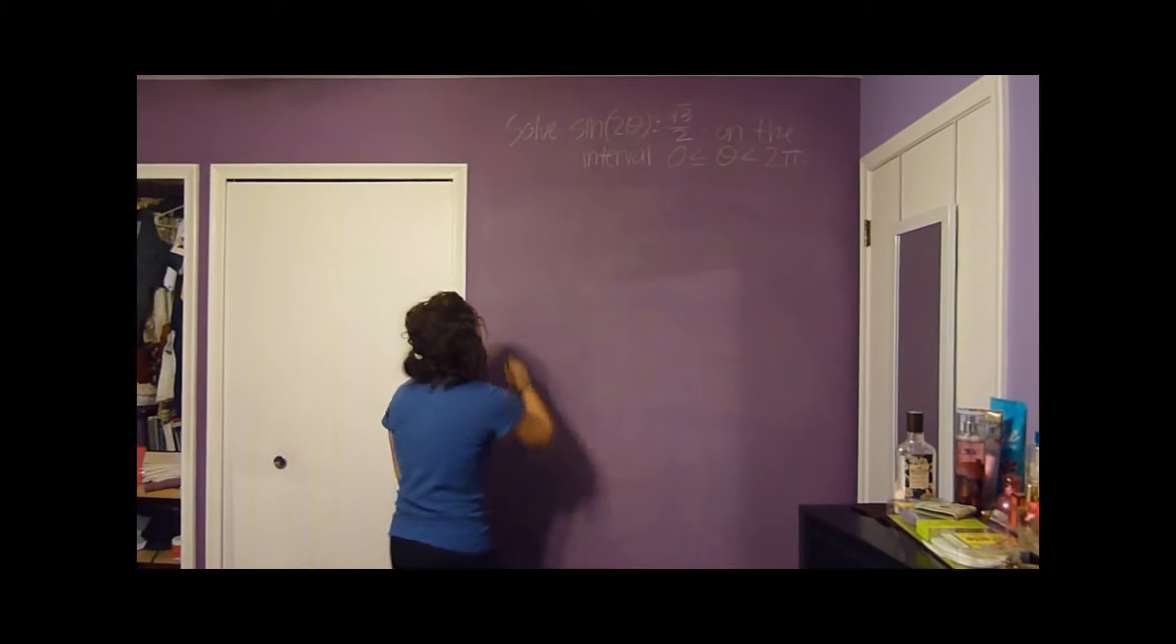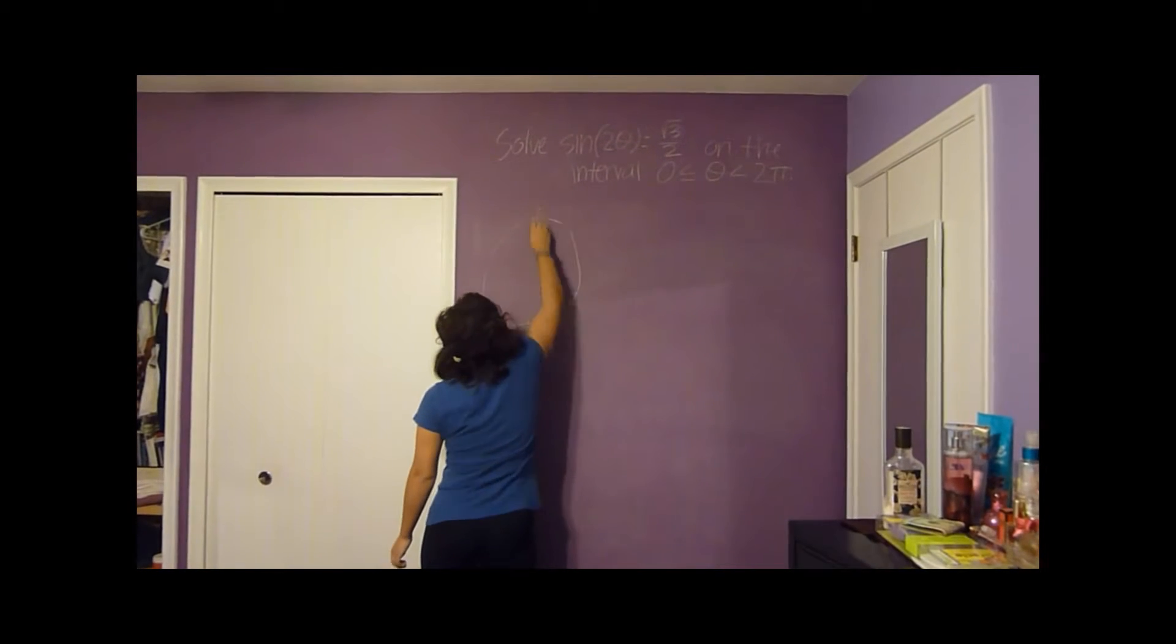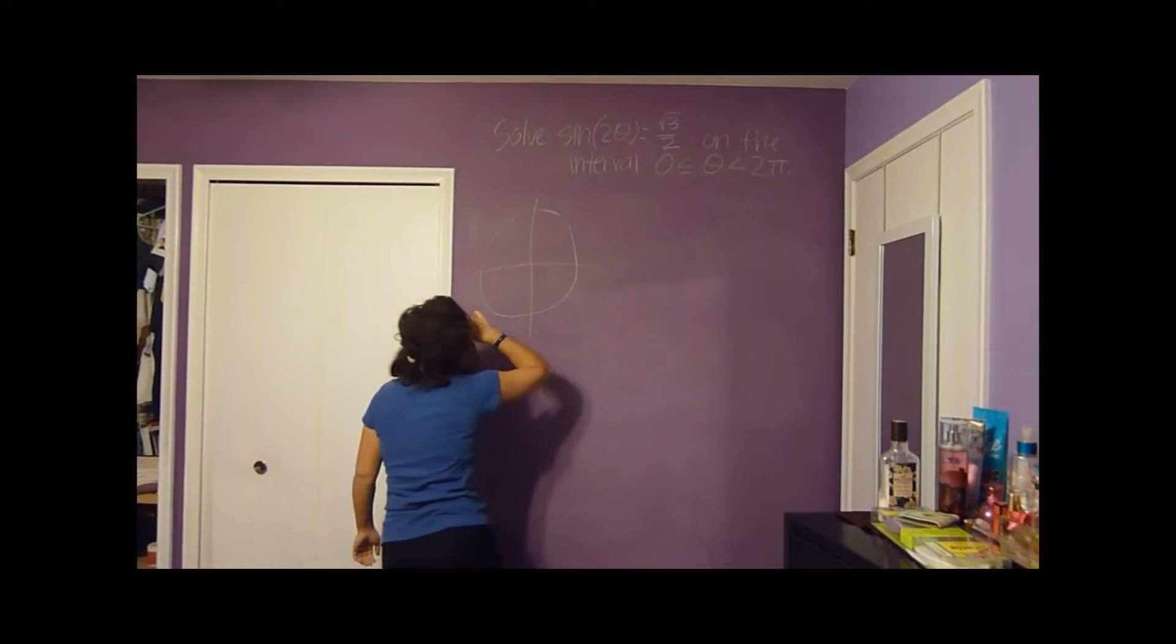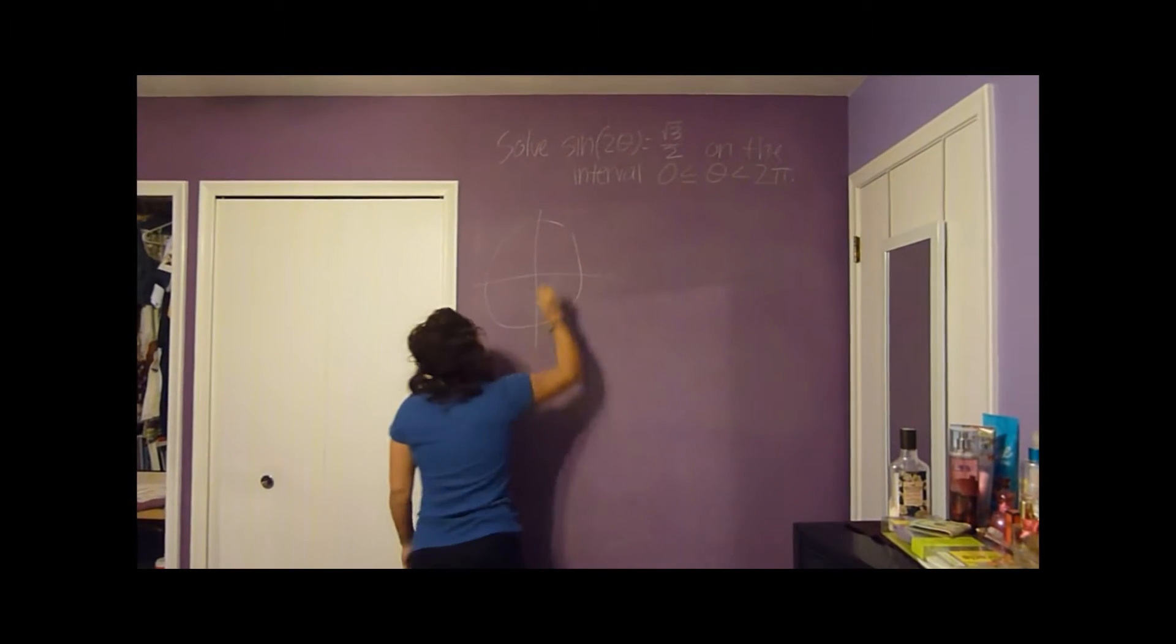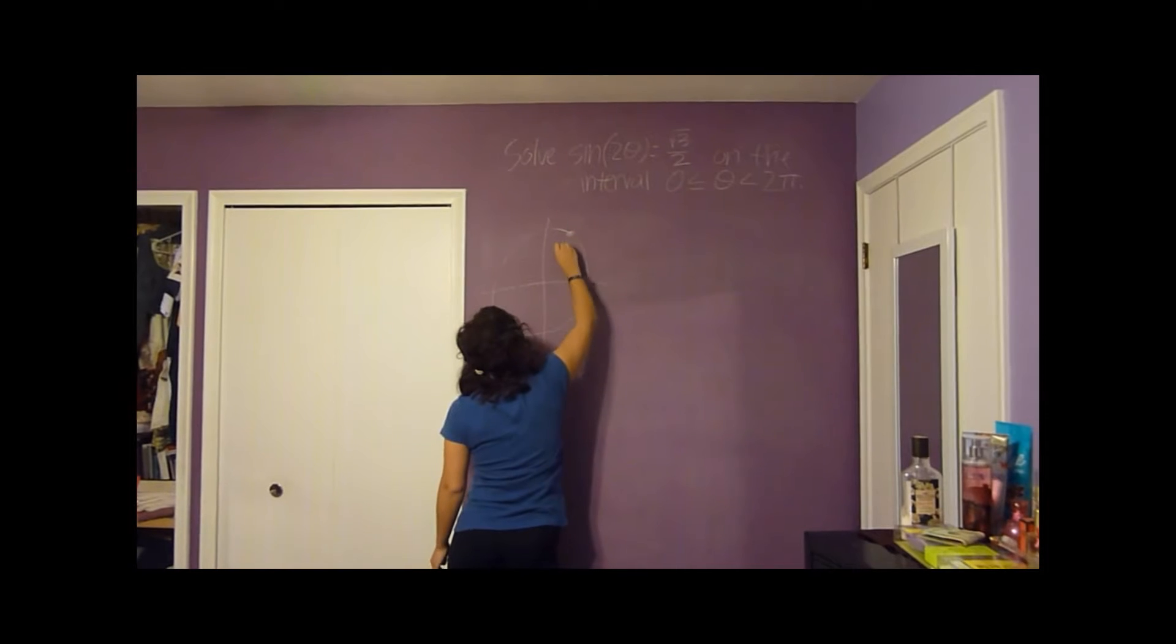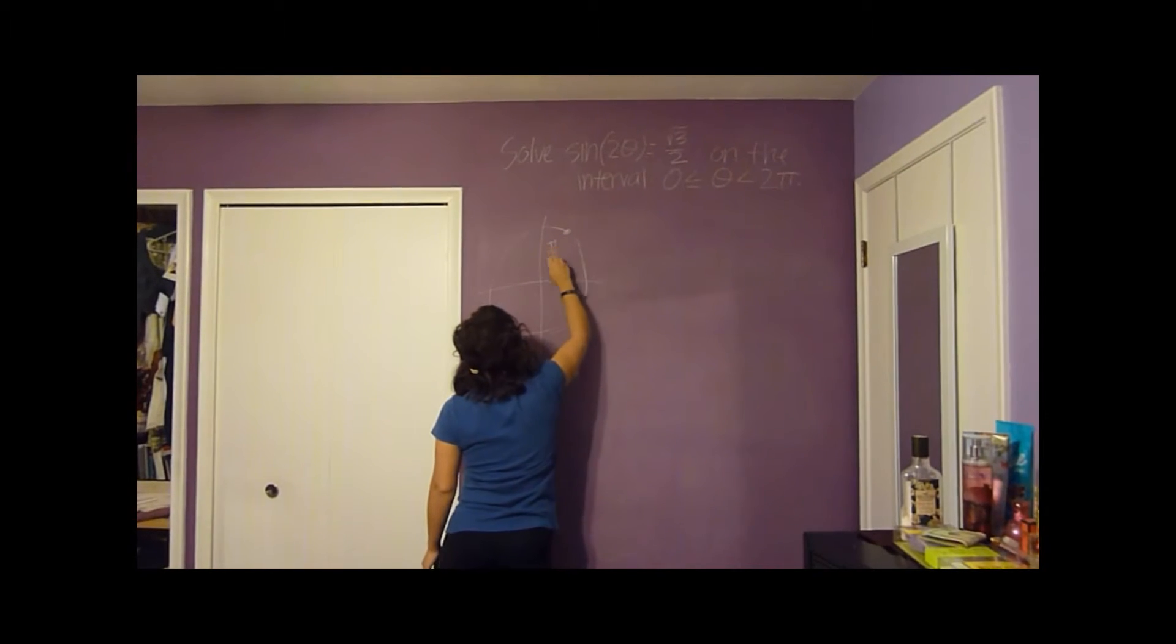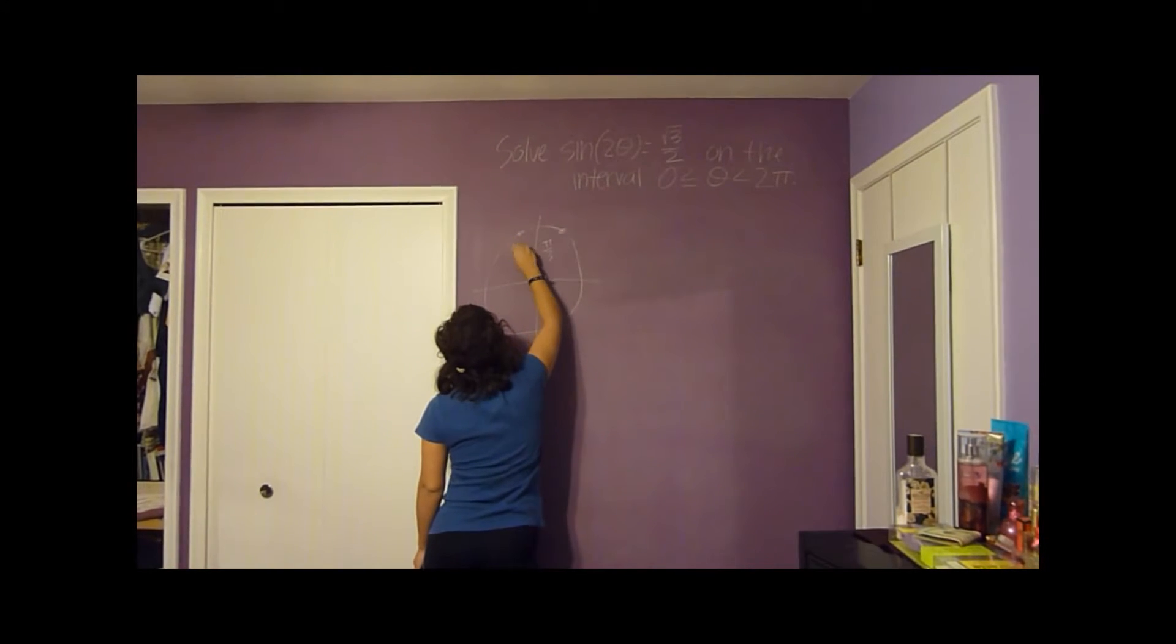We're going to start off on the unit circle where sine is equal to radical 3 over 2, which is here at pi over 3 and here at 2 pi over 3.